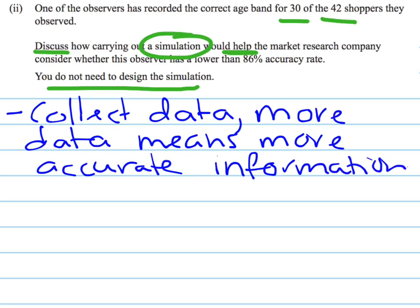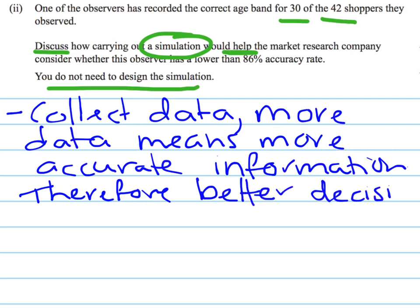Therefore, if we have more accurate information, better decisions are made. So we do simulations to collect more data to improve the accuracy of what we know. The more accurate we are, the more information we have, the better our decision-making process is.